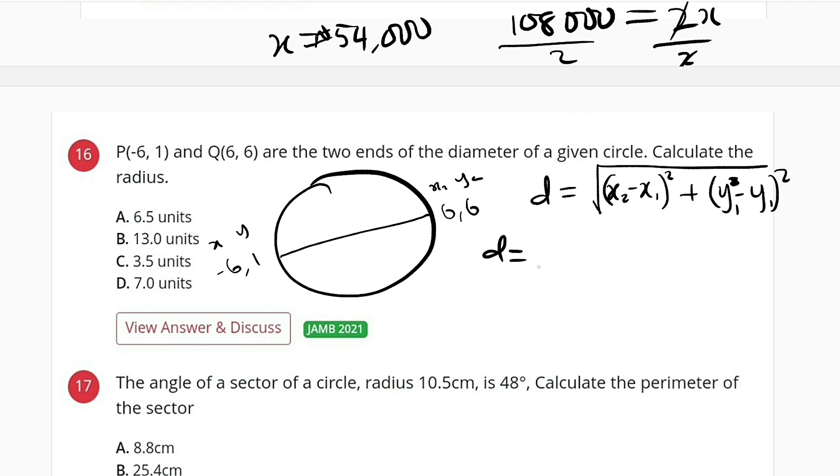So d will be equal to the square root of: x2 is 6, and x1 is -6. So we have 6 minus -6, so it becomes plus. We have plus 6, all squared, then plus. The next one is y2, which is 6, then minus y1, minus 1. This is squared.